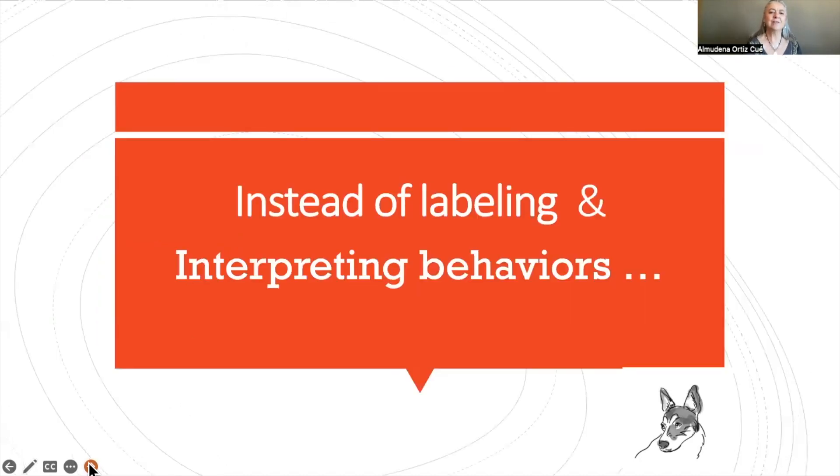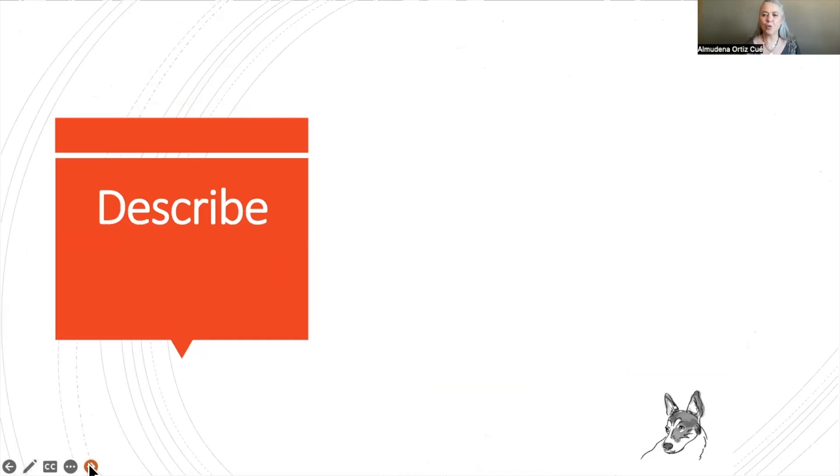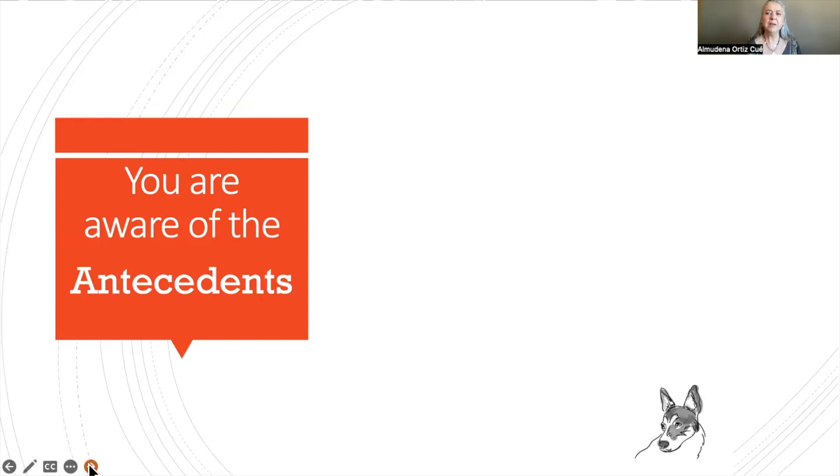So what can we do instead of labeling and interpreting behaviors? We can describe them. We can describe what we are observing, what is happening at the moment. And ideally, besides only observing what is happening, we could also be aware of the antecedents of that behavior or the behaviors that we want to modify.